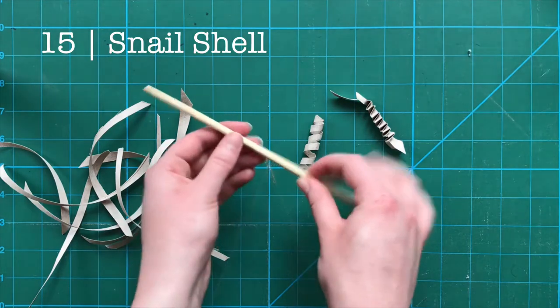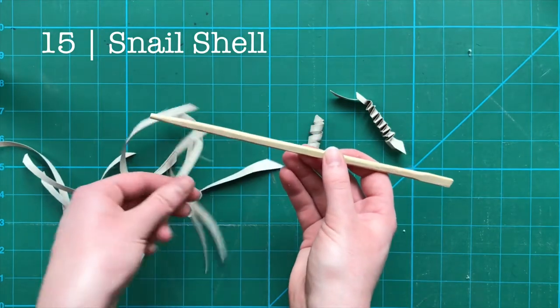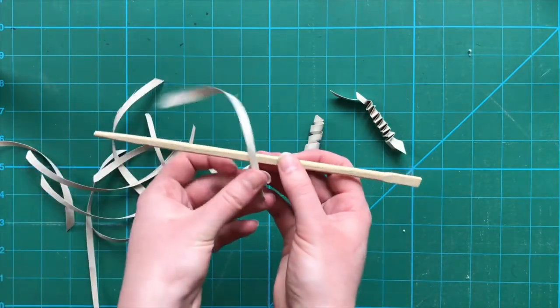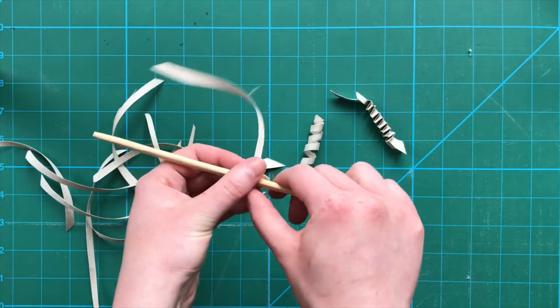Number 15, snail shell. If you do nearly the same thing, but wrapping it on top of itself, you'll make another snail shell shape. This one will typically be more neat and rounded.